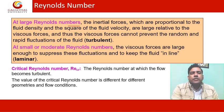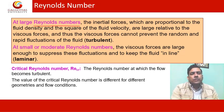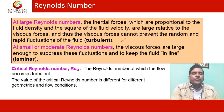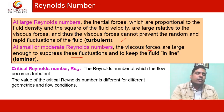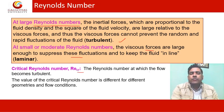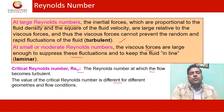A large Reynolds number indicates that inertia forces, which are proportional to fluid density and the square of fluid velocity, are large relative to viscous forces. Thus viscous forces cannot prevent the random and rapid fluctuation of the fluid, indicating turbulent flow. Small or moderate Reynolds numbers indicate that viscous forces are large enough to suppress these fluctuations and keep the fluid in line — that is laminar flow. The critical Reynolds number is the value at which flow becomes turbulent, and it differs for different geometries and flow conditions.